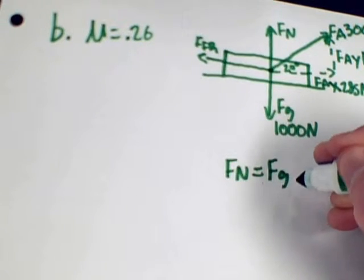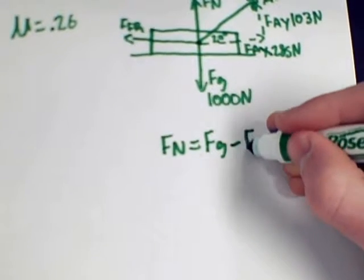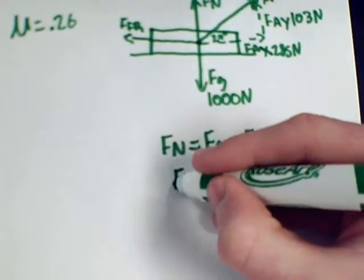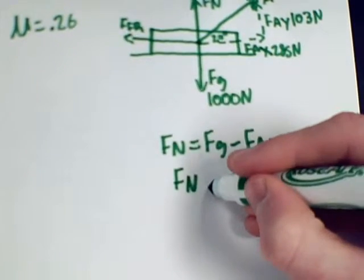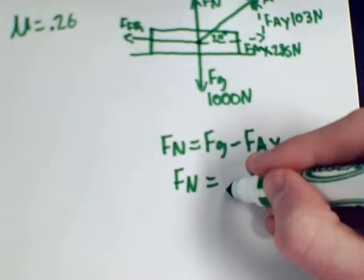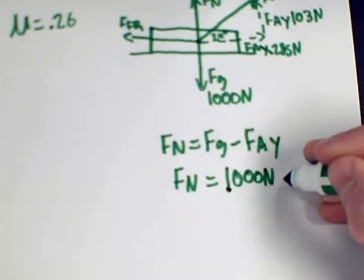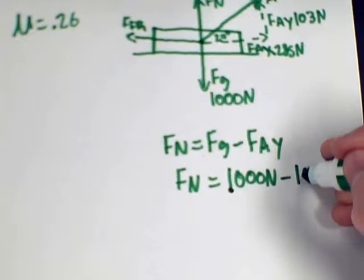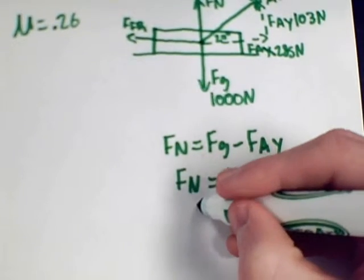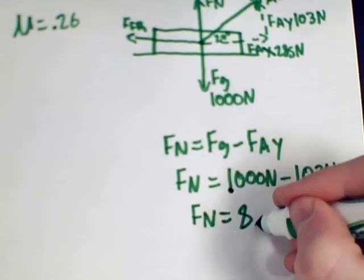Now the normal force equals the force of gravity minus the force applied in the y direction. We're doing this because instead of being pushed, the crate is being pulled. So the normal force equals 1000 N minus 103 N, which gives us 897 N.